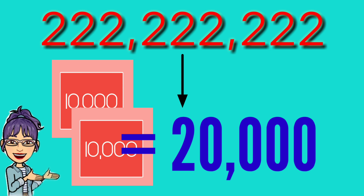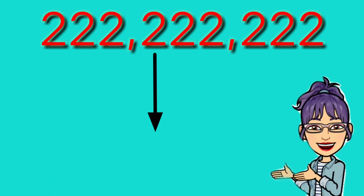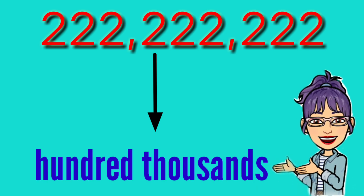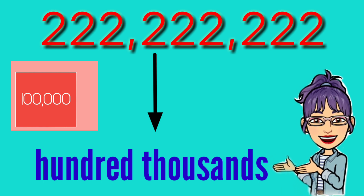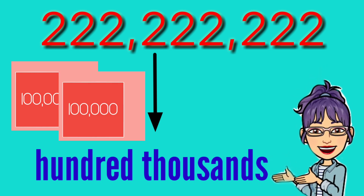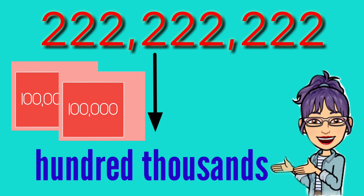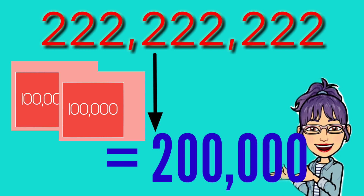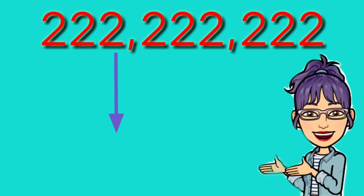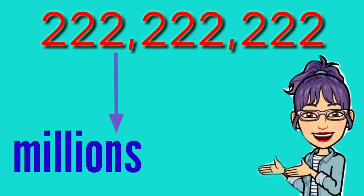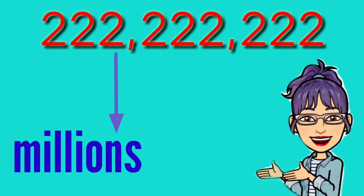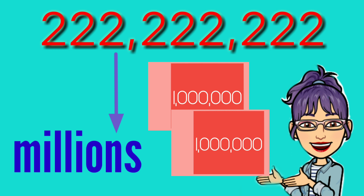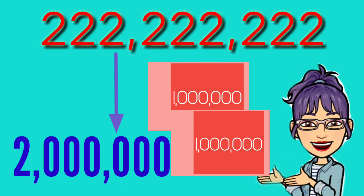The sixth 2 from the right is in the hundred thousands place: two groups of 100,000. So 100,000 plus 100,000 equals 200,000 — that is the value of the sixth 2. The seventh 2 is in the millions place: 1 million plus 1 million equals 2 million.